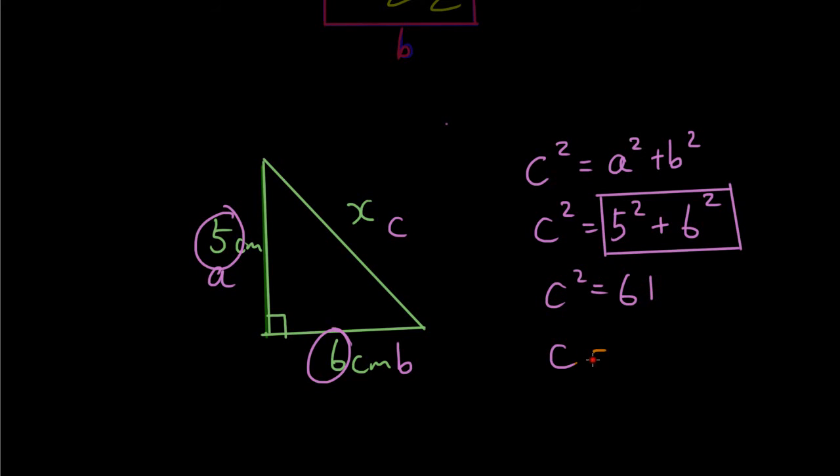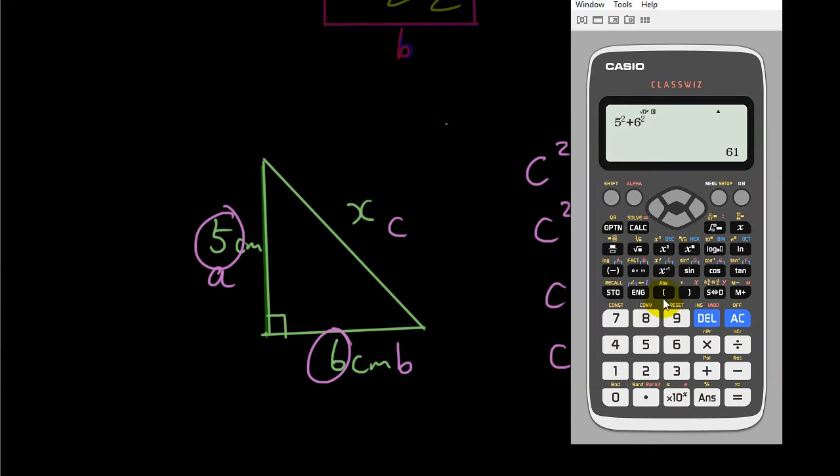Now how do we find c? Well obviously you square root sixty-one. So let's square root it on your calculator. Square root of sixty-one. And the answer is seven point eight one.